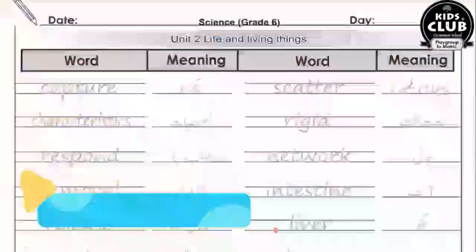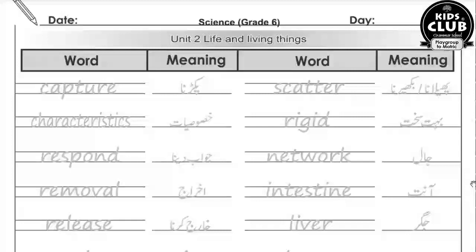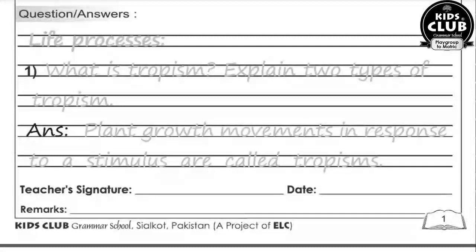Bismillahirrahmanirrahim, Assalamualaikum. Grade 6 Science, Unit Number One: Life Processes. Question and Answers. Question number one: What is tropism? Explain two types of tropism. Tropism kya hai, tropism ki do types explain kare.